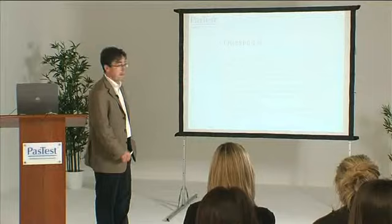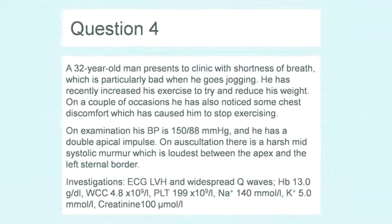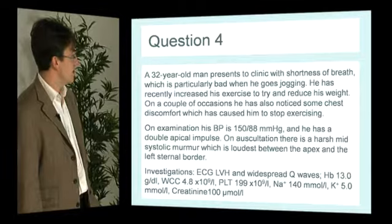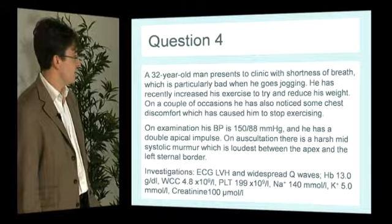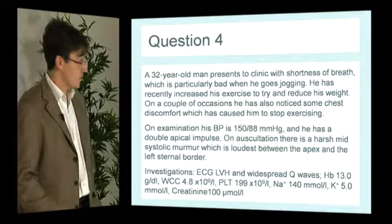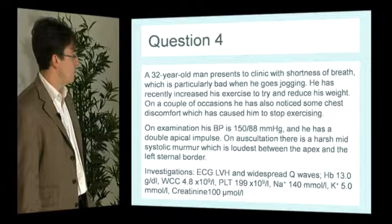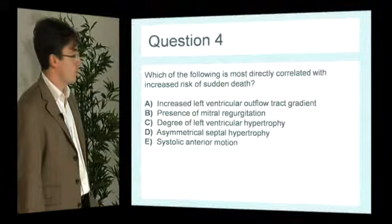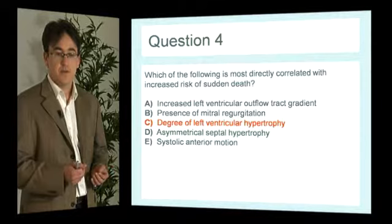Question four: a 32-year-old man presents with shortness of breath particularly when jogging, and on a couple of occasions has had chest discomfort causing him to stop exercising. Blood pressure is 150/88. He has a double apex impulse. Auscultation reveals a harsh mid-systolic murmur loudest between the apex and the left sternal border. ECG shows left ventricular hypertrophy and widespread Q-waves. Which feature is most directly correlated with increased risk of sudden death? If you answered C, the degree of left ventricular hypertrophy, you're correct.